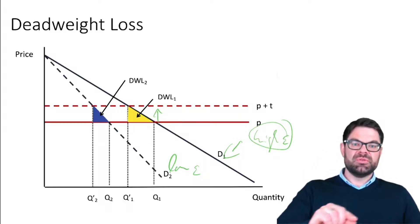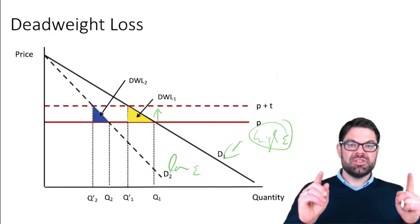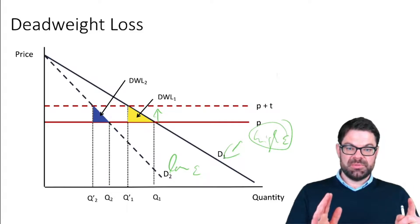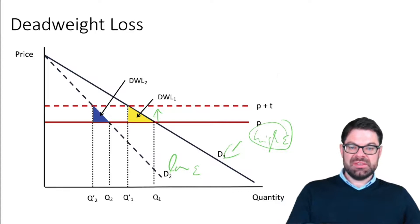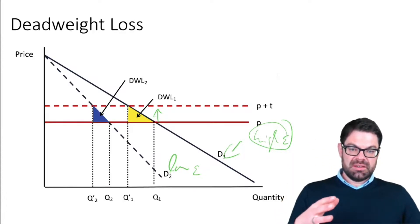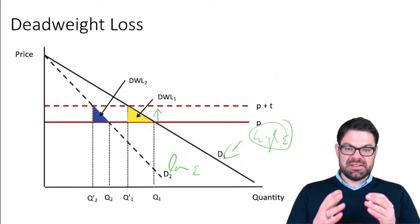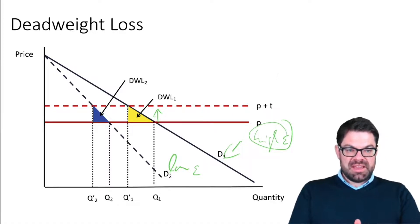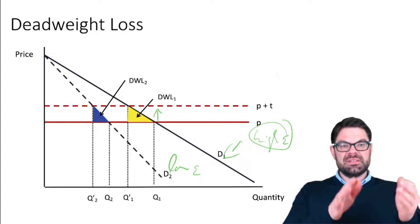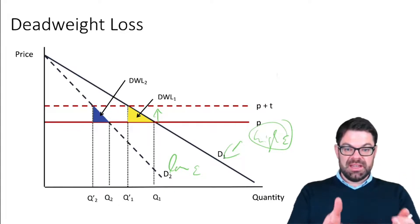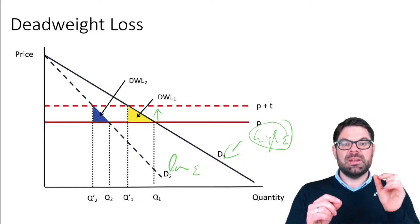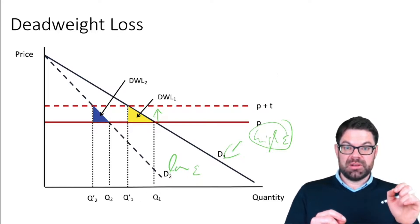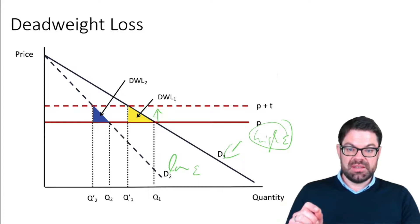Even though the tax revenue may be the same, the deadweight loss is very big due to that strong change in the number of units consumed. Whereas if consumers have very few alternatives and their demand is very inelastic, that blue triangle is smaller because the same increase in price doesn't lead to such a big reduction in the quantity consumed. Therefore the deadweight loss is a lot smaller; the efficiency loss to the economy is a lot smaller.